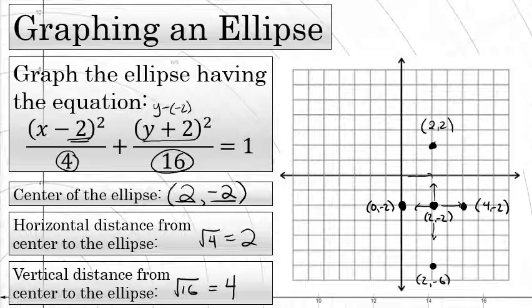And I now have five points plotted on the coordinate plane. Remember, the center is not actually part of the ellipse, but the other four points are. So I'll join those four points with as smooth of a curve as I can. And that will represent the graph of the ellipse.